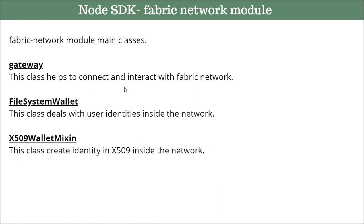The Gateway uses the connection profile to make the connection, because the Gateway doesn't have information about which network it has to connect to. It needs details about which network, which organization, and which peer to connect to — and all those details come from the connection profile.